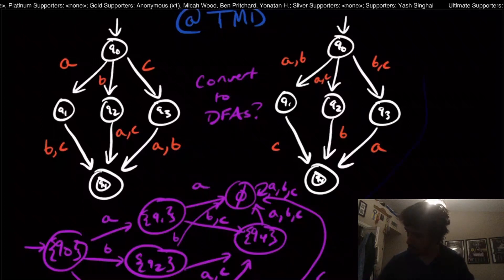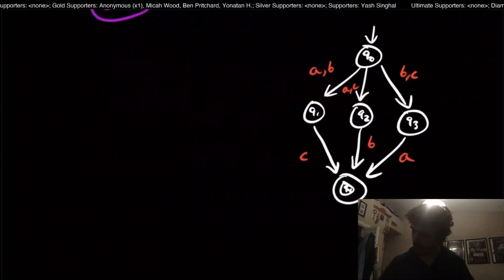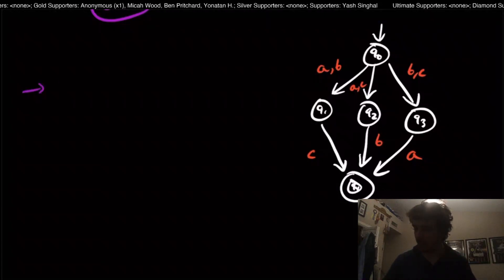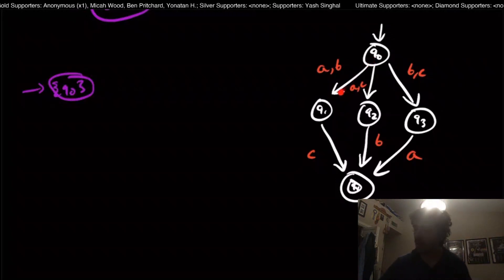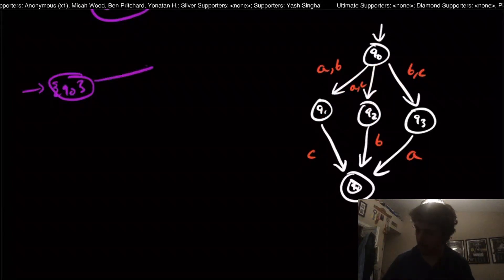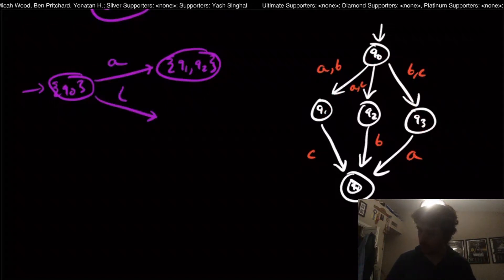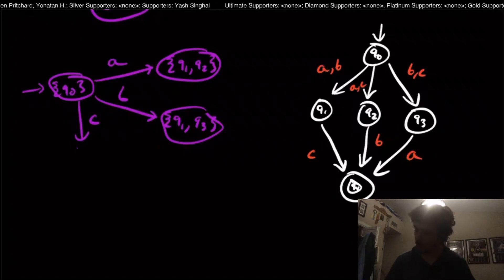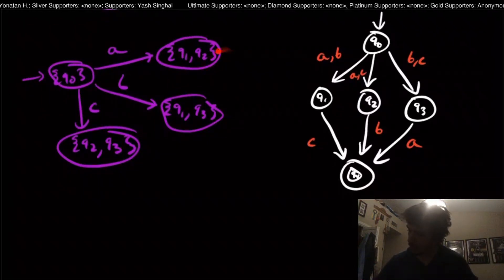Now let's do the other NFA. Again we start with the set containing q0. Notice that on input 'a' we could go to either q1 or q2, so we have to handle that — no epsilon closure needed since there are no epsilon transitions. On input 'a' we go to {q1, q2}, on input 'b' we go to {q1, q3}, and on input 'c' we go to {q2, q3}.